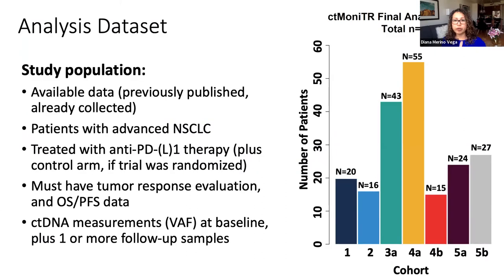The CT Monitor Working Group decided on a set of criteria that would ensure success while balancing scientific robustness within a rapid time frame. The criteria used for the collection of data included immediately available data from patients with advanced non-small cell lung cancer who were treated with an immune checkpoint inhibitor, and we required studies to have evaluated tumor response, collected survival data, and a minimum of two CT-DNA measurements — one at baseline and one or more follow-up samples — assessed and reported as variant level data in the form of variant allele frequency, or VAF. The chart on the right shows the sample size of the pooled data set used for the final analyses, which included data from five sponsors split into seven cohorts with a total of 200 patients.